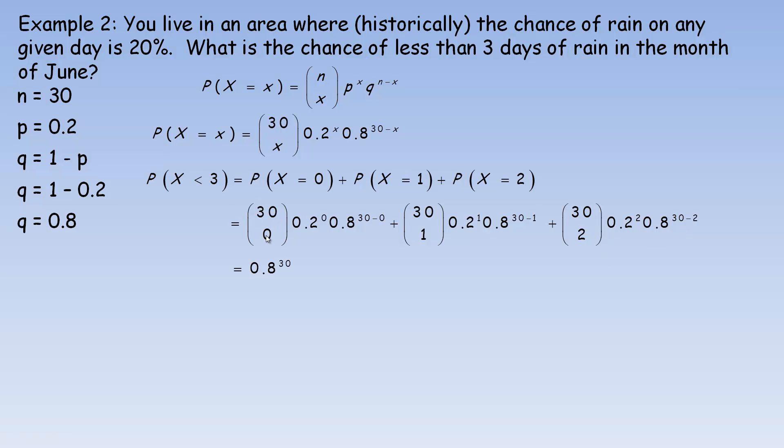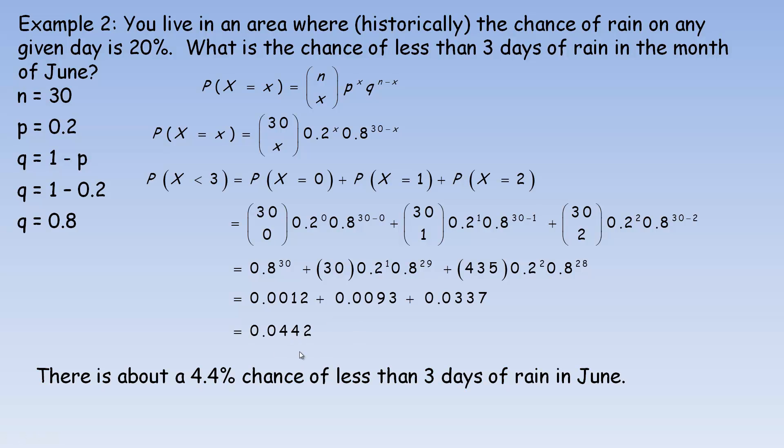Now, 30 choose 0 is 1, and .2 to the power of 0 is also 1, so this is really just .8 to the power of 30. 30 choose 1 is 30, times .2 to the 1, and then the exponent here on the .8 simplifies to 29. 30 choose 2 is 435, times .2 squared, and then this would be .8 to the 28th. So we need to calculate each of those. .8 to the 30th is .0012. If we multiply these together, you get .0093, so that's the chance of 1 day of rain in the month of June. And multiplying this out, we get .0337. So add them up, and we get this. So that means there's about a 4.4% chance of less than 3 days of rain in June.